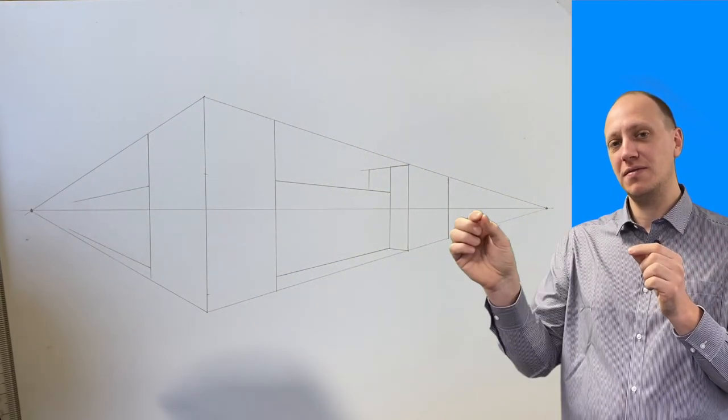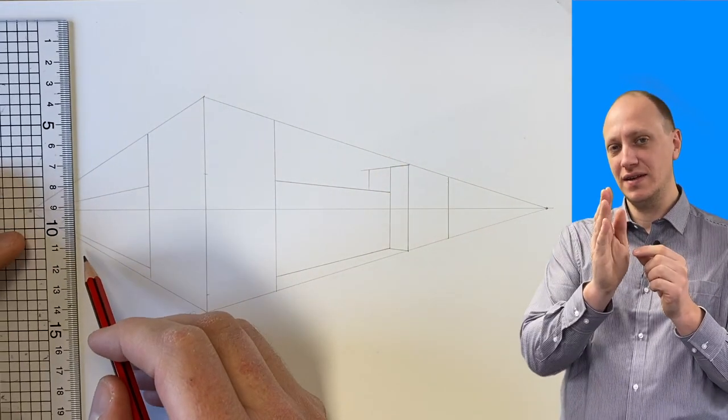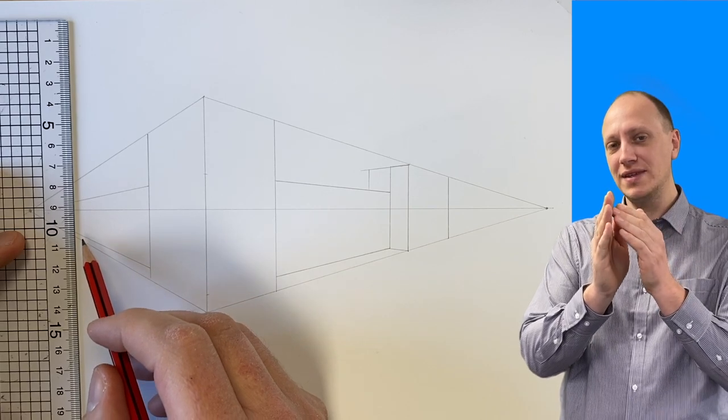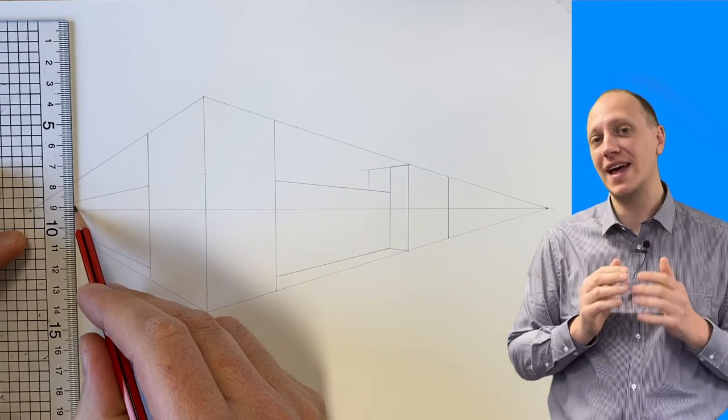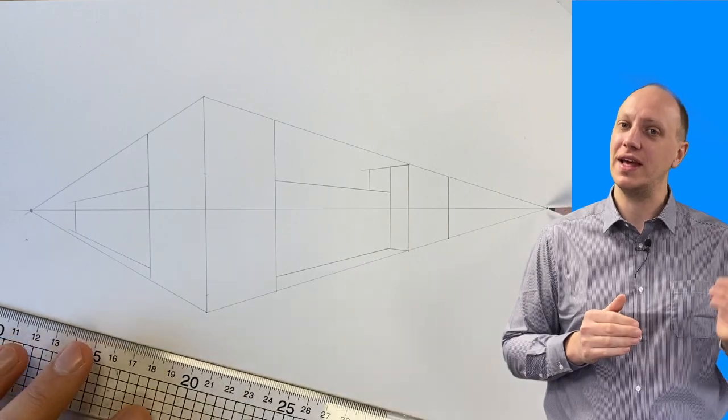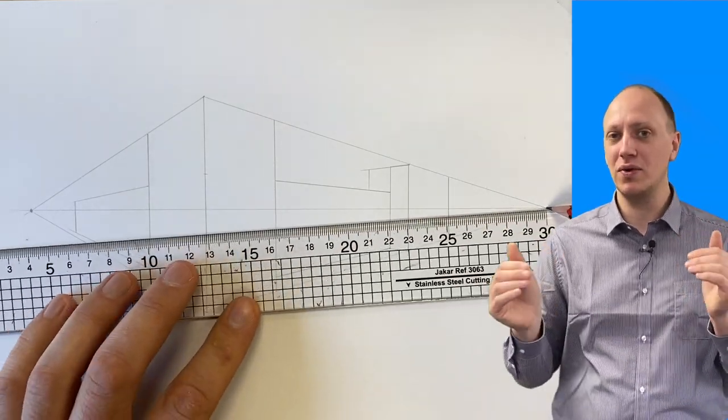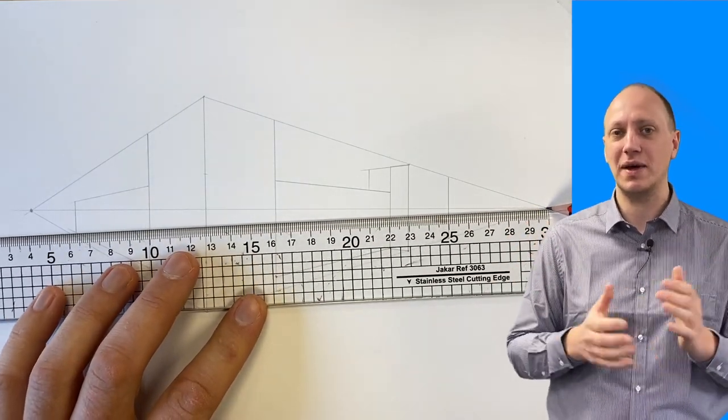We can then do the same with the top of that wall so that both of our walls are the same height. We mark the height of our wall on the center line, take that point to our left as well, and then use that height as the height of our wall on the left as well. This keeps both walls the same height in this perspective.